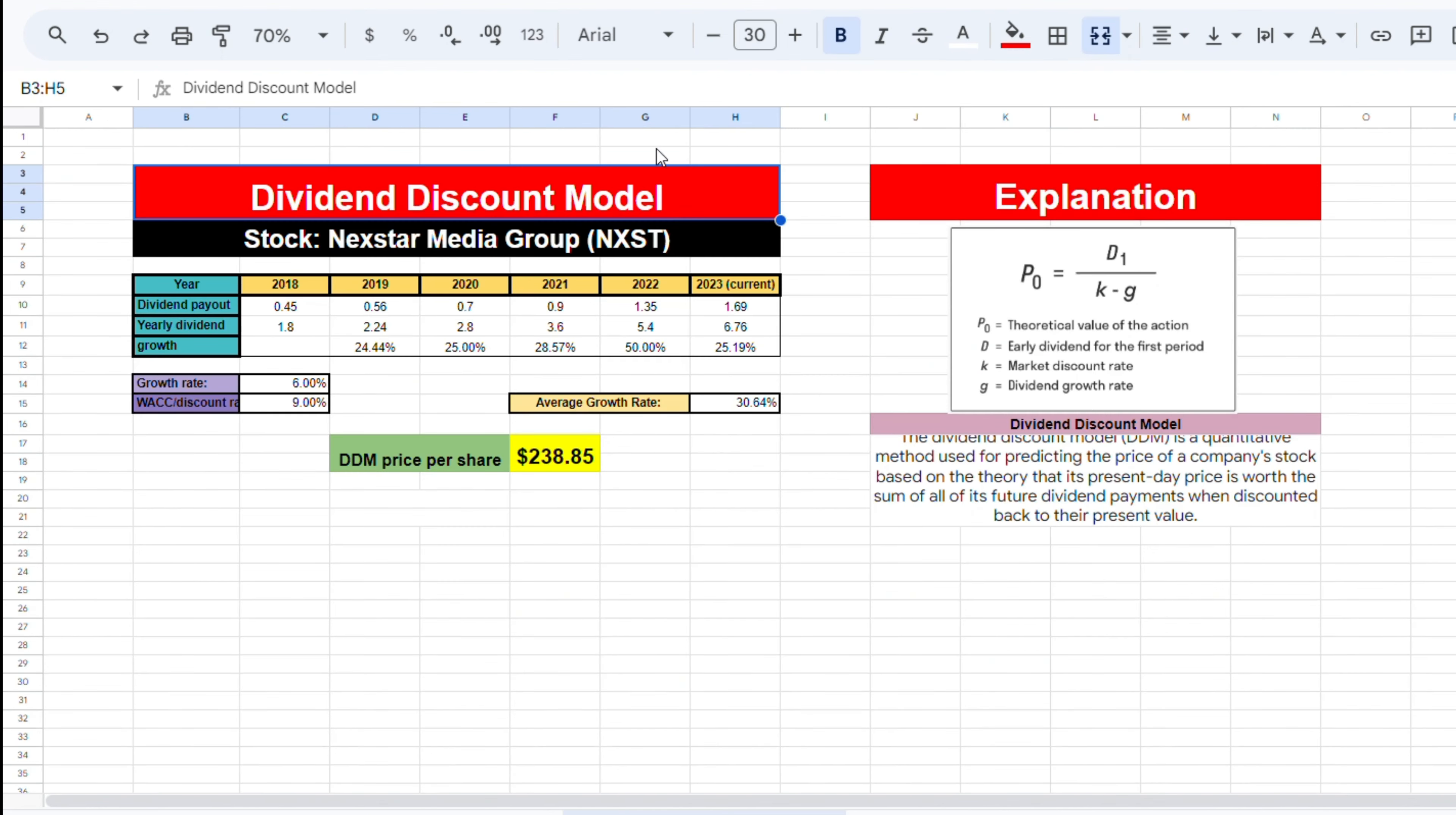Next up is the dividend discount model. This model uses future dividend payments, discounted back to its present value, in order to determine the value of a company. We plug in the historical dividend payouts, giving us an average growth rate of over 30%. Using a discount rate of 9% and a growth rate of 6%, which I think will be sustainable for the long-term future, we can calculate the stock price, giving us a price per share of $238.85.